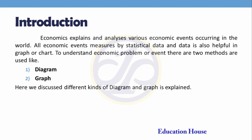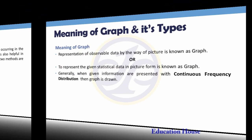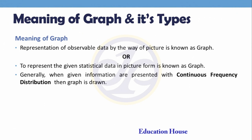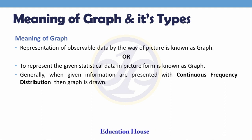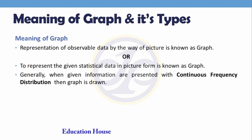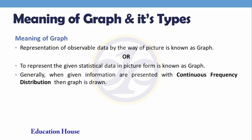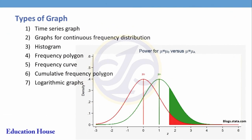Meaning of graph and its types: representation of observable data by way of a picture is known as a graph, or to represent given statistical data in picture form is known as a graph. When information is presented with a continuous frequency distribution, a graph is drawn.